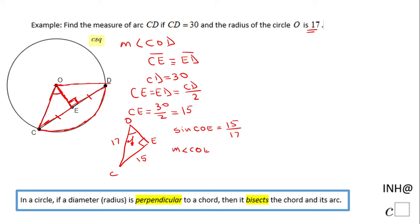So for finding the measure of angle COE, I'm going to use the inverse function on a calculator, the inverse sine function. The measure of the angle for which the sine is 15 over 17 is 61.9 degrees, and I'm going to round it to 62 degrees.